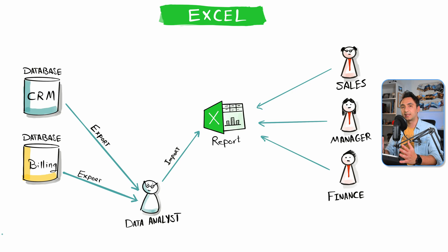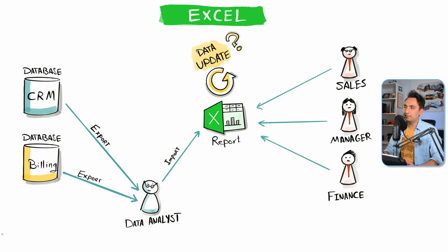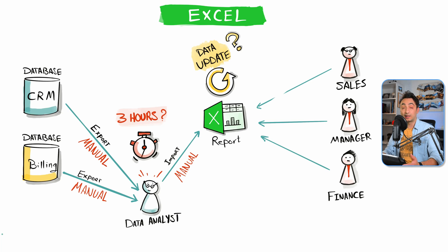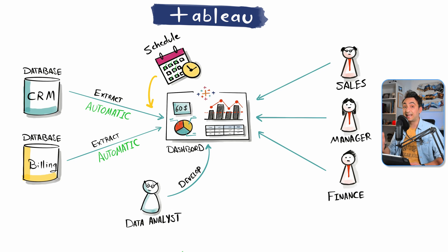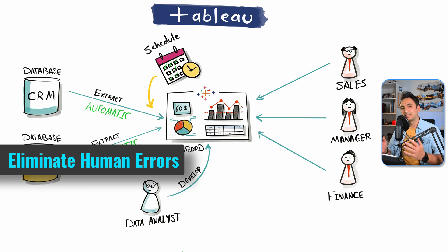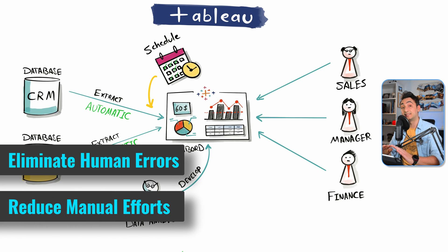The first benefit is automation. With Excel, when it's time to update data, an employee has to sit down every day and manually extract data from source systems, import it into Excel, do calculations, and prepare reports — over and over again, which is very time-consuming. With a modern BI tool like Tableau, we can automate this by creating a scheduled refresh — for example, every day at 7 AM Tableau automatically connects, pulls the data, and prepares the reports. This eliminates human errors and removes the need for employees dedicated solely to this manual task.